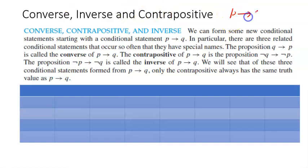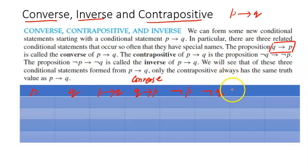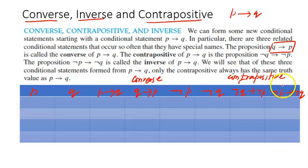Now let us talk about the converse, inverse, and contrapositive of a conditional statement. If p implies q is the original statement, then the converse is q implies p. The contrapositive is: negation of q implies negation of p. And the inverse is: negation of p implies negation of q.